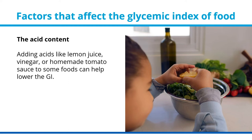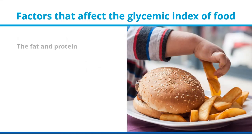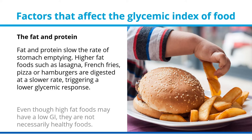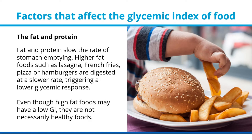Adding acids like lemon juice, vinegar, or homemade tomato sauce to some foods can help lower the GI. Fat and protein also slow the rate of stomach emptying — higher fat foods such as lasagna, french fries, pizza, or hamburgers are digested at a slower rate, triggering a lower glycemic response. However, even though high-fat foods may have a low GI, they are not necessarily healthy foods.